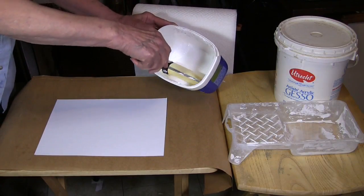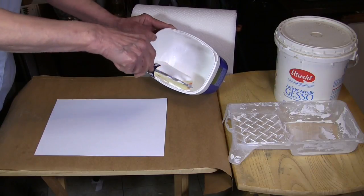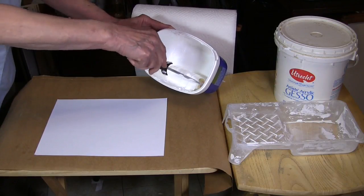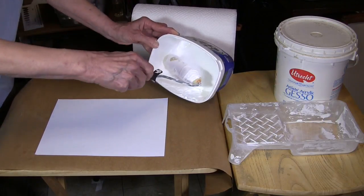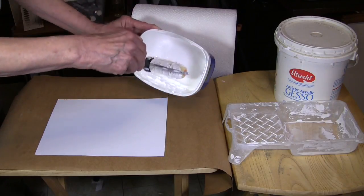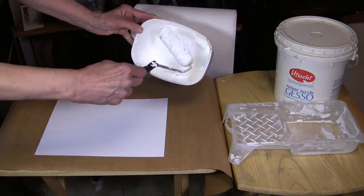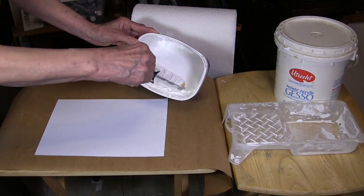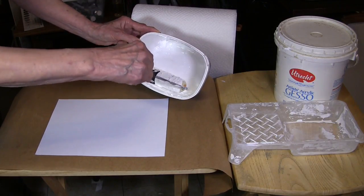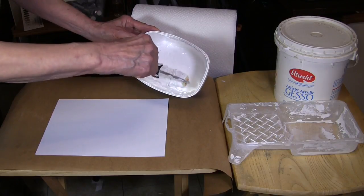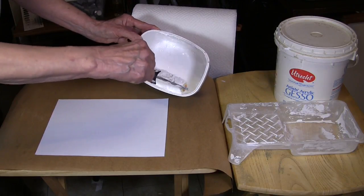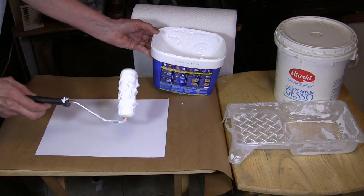I have gesso. You can get gesso from any art supply store. Let me emphasize here it should be acrylic gesso. I put it in this square container just a little bit at a time in the bottom, and then I use this roller, which is just a sponge roller that you can find in any hardware store or Walmart or those kinds of stores. And I load it really good like this.